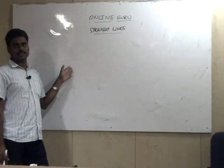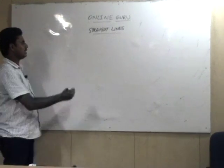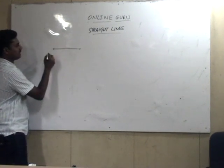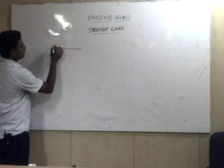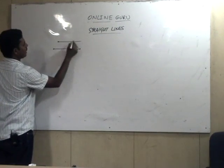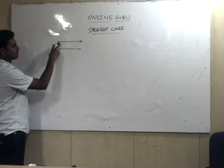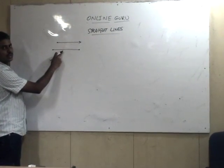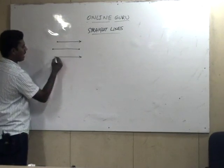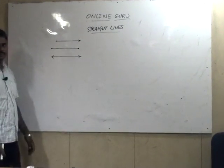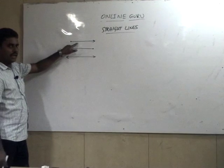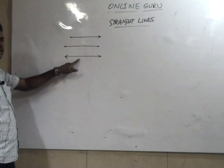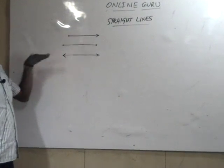We have already learned about straight lines in lower sections. A line segment has two endpoints. A ray has only one endpoint. A line has no endpoints.